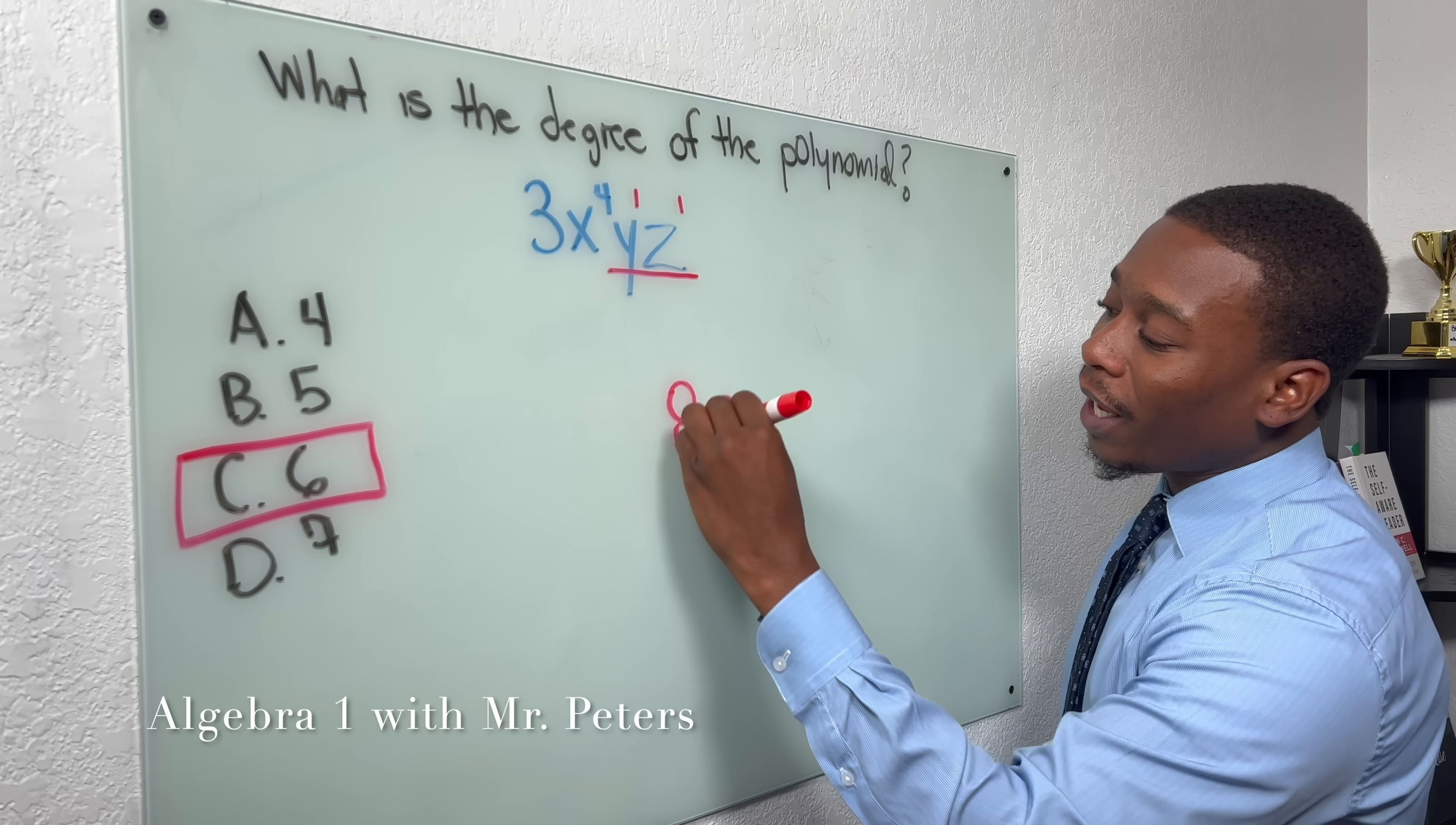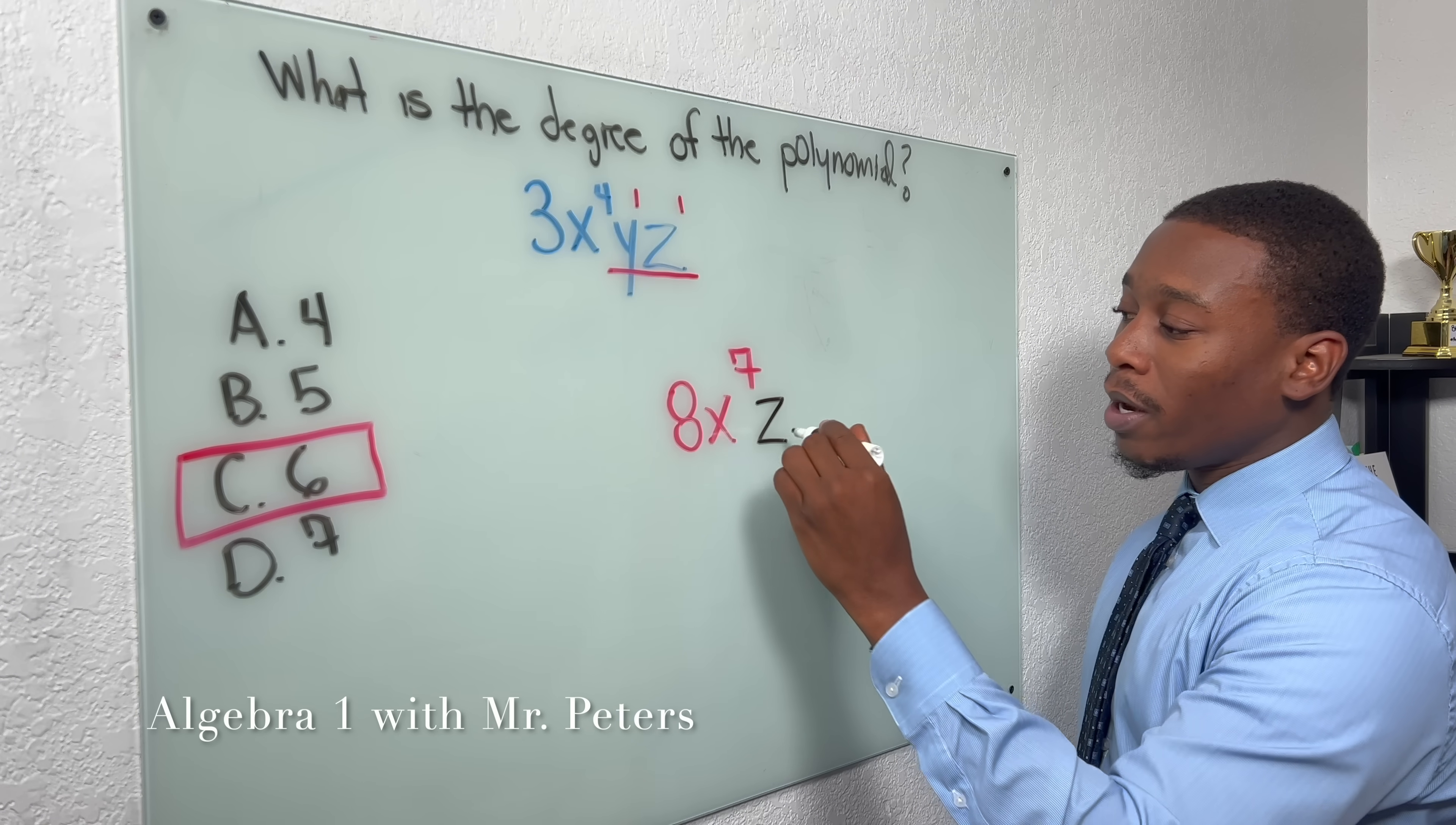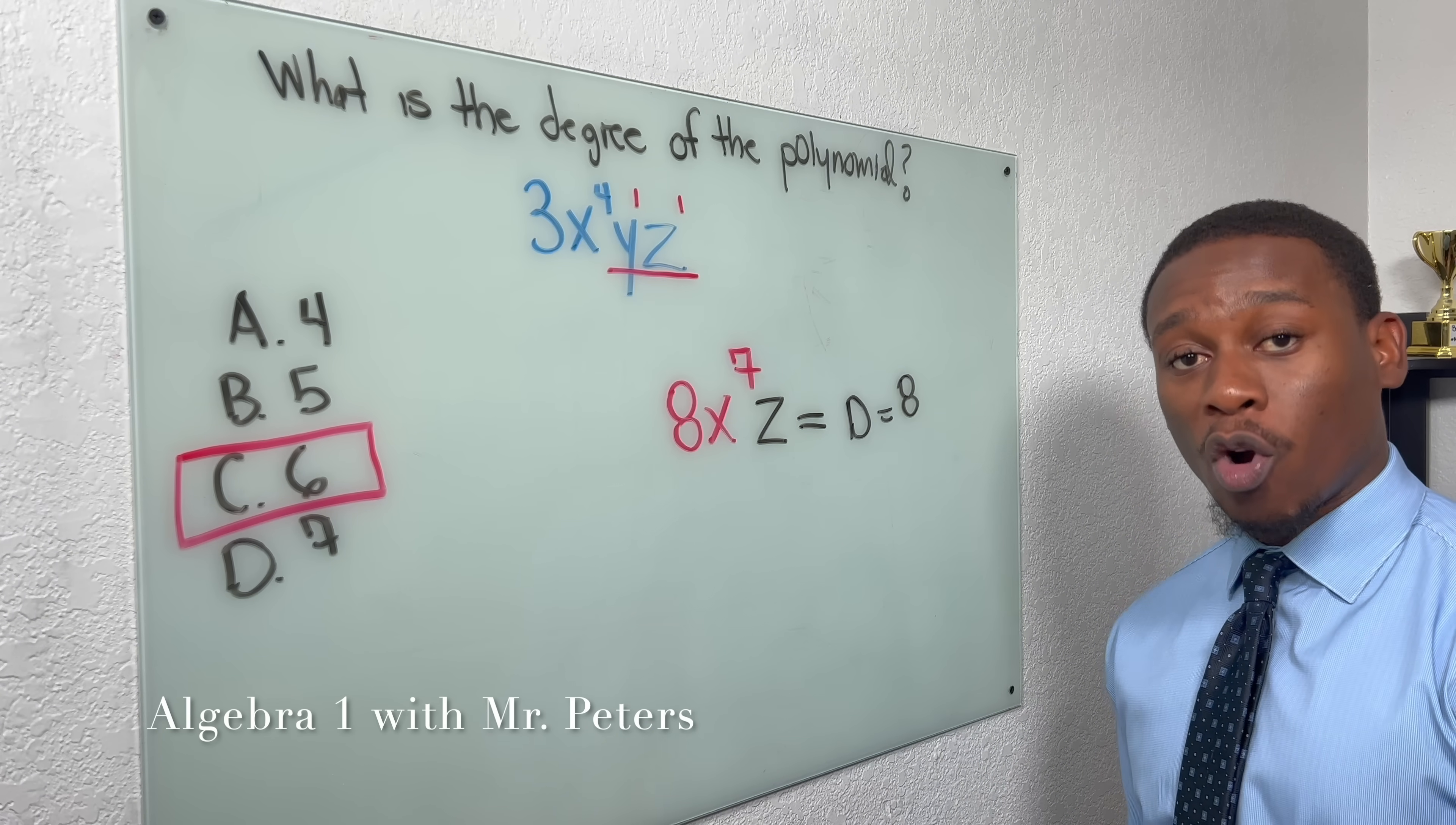Now we go back to 8x^7, right? Degree is 7. But if I add one more variable, now this degree is going to be 8. So just please make sure you guys understand that concept when they're asking for the degree of a polynomial.